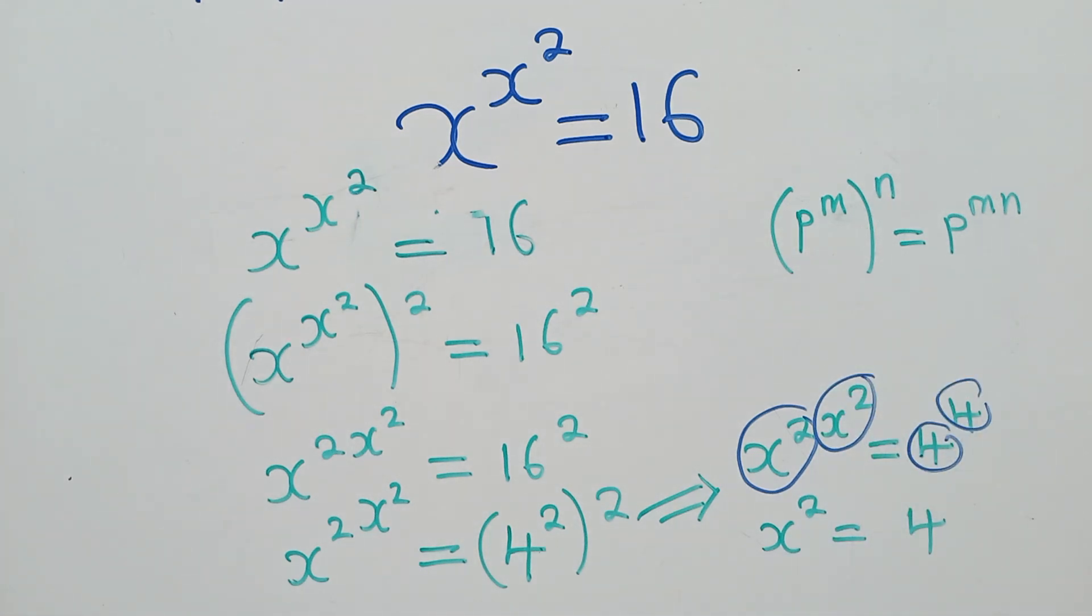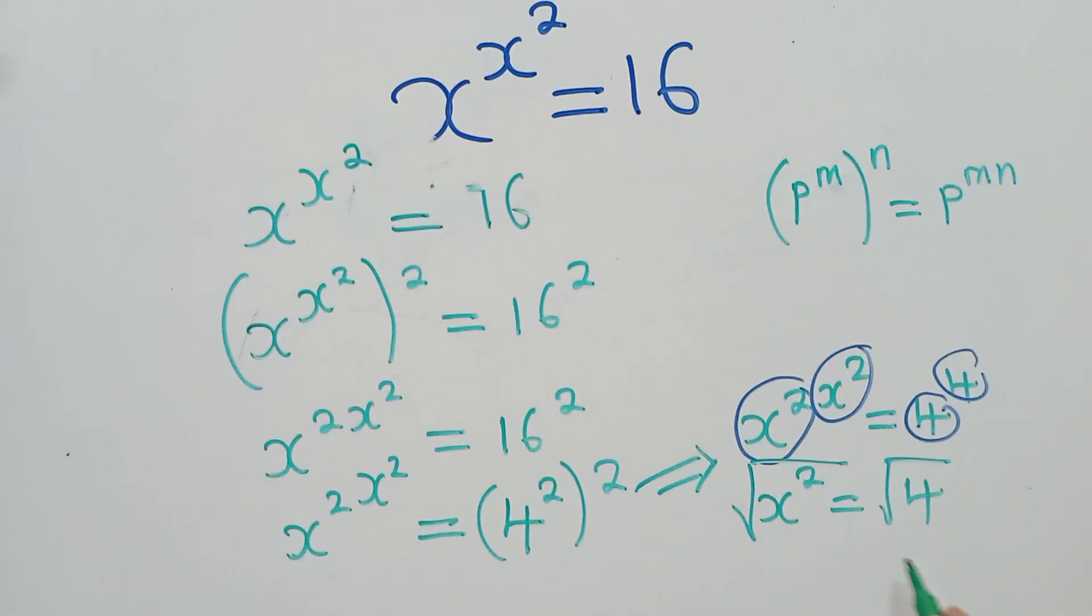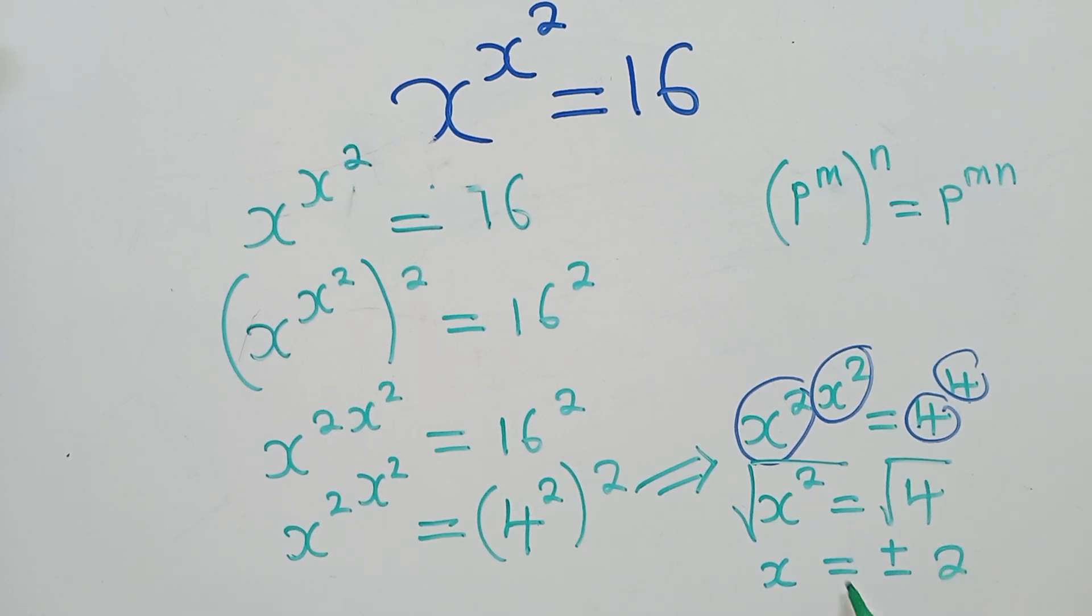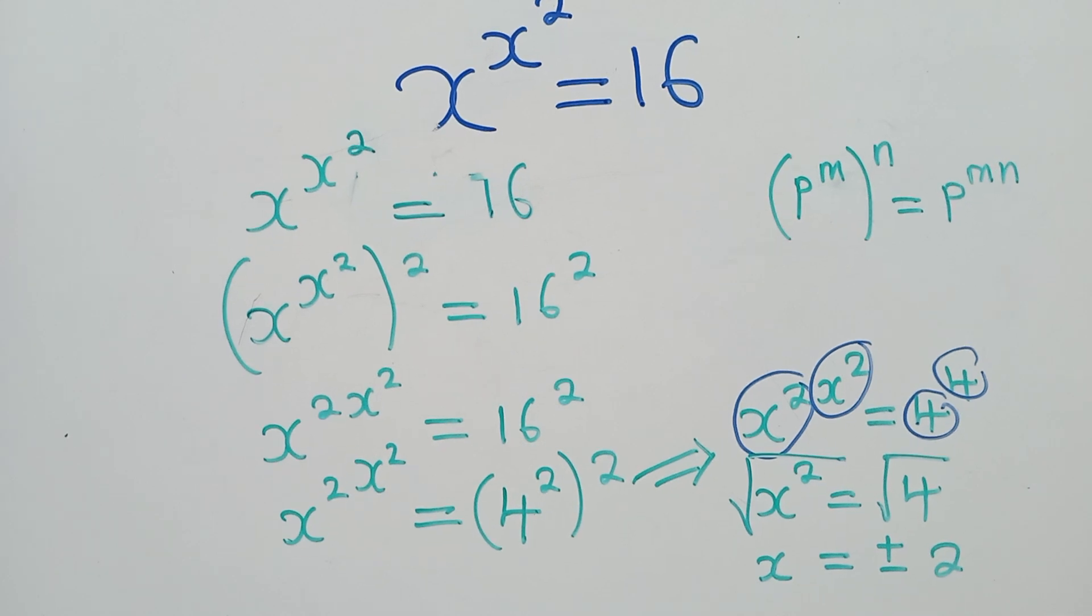So now to solve for x, we square root both sides. We shall get x is equal to positive or negative 2. Between these two numbers, one is the solution.